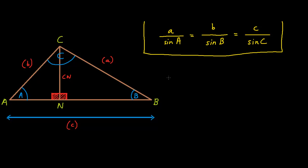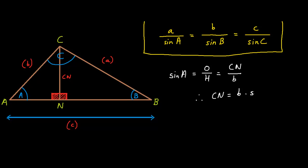To start off, we first need to find out what sine a is. Sine a equals opposite over hypotenuse, which equals cn over b. Therefore, cn equals b multiplied by sine a.